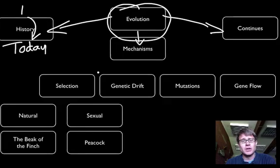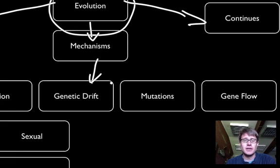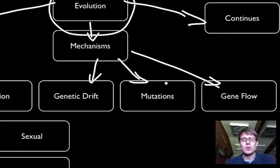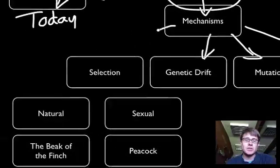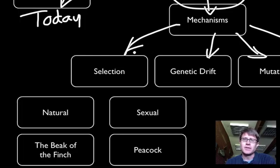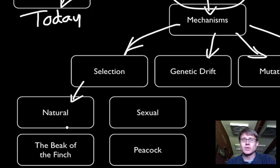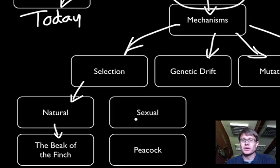What are the mechanisms by which evolution occurs? We've already talked about genetic drift and mutations, and we'll discuss them more in the next podcast. But today I want to specifically talk about selection. Natural selection is when nature selects which organisms are able to survive or die. The quintessential example is the beak of the finch — the work of Darwin but more importantly the work of the Grants. Sexual selection is a different type, and artificial selection is another important one.